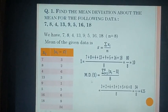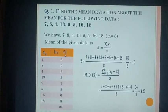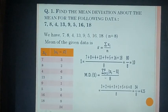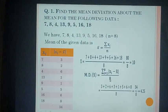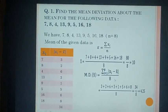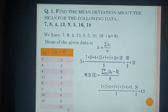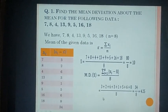The sum of all |xi − x̄| is 34. Now applying the formula: δx̄ = Σ|xi − x̄| / n = 34 / 8 = 4.25. So the mean deviation about the mean is 4.25.